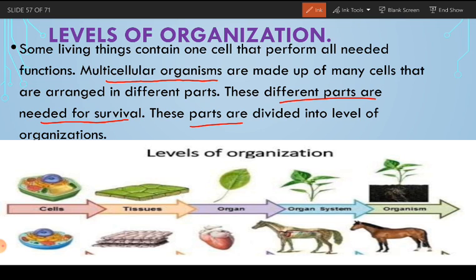These parts are divided into levels of organization. The first level of organization is the cell. When cells combine, they form the next level of organization, which is tissue.